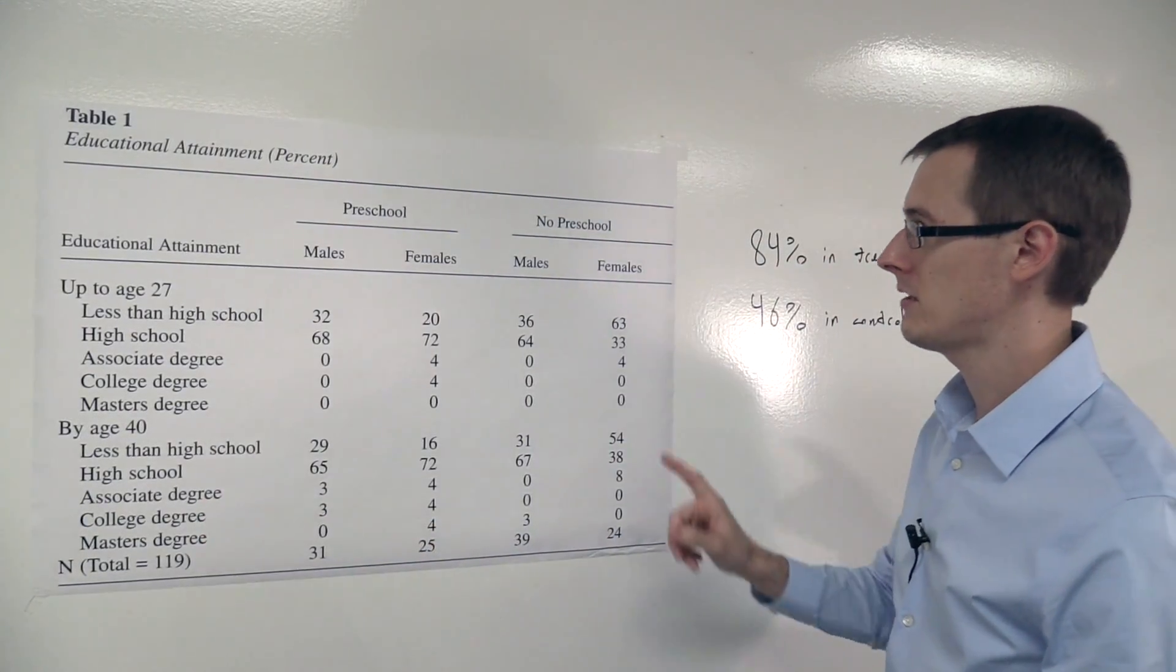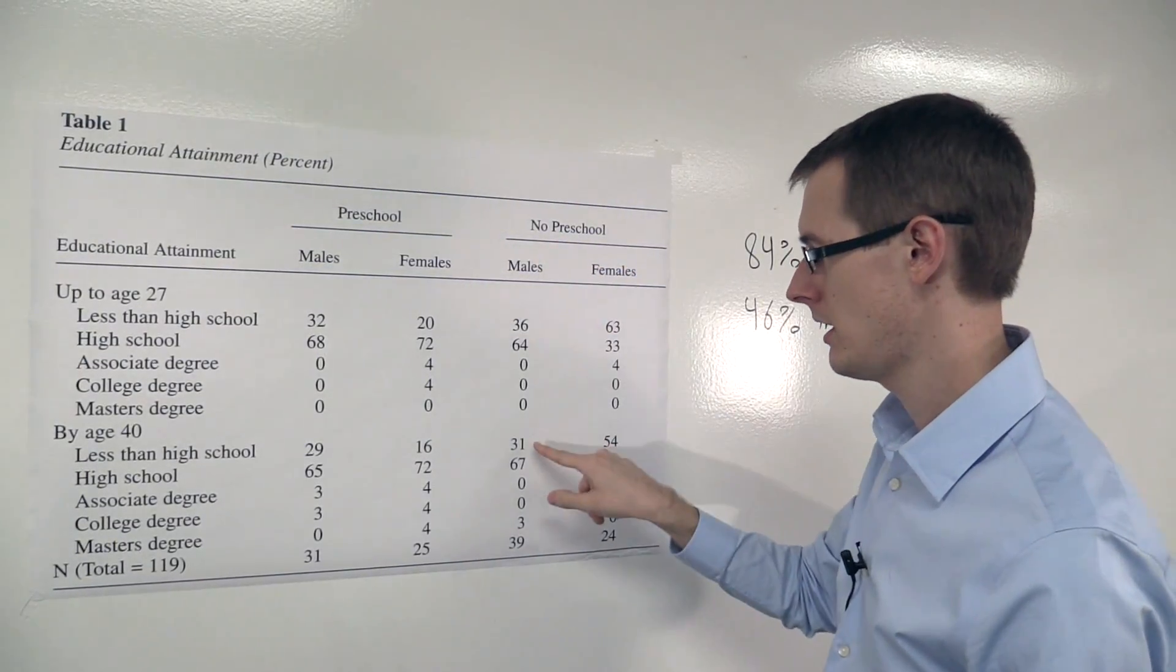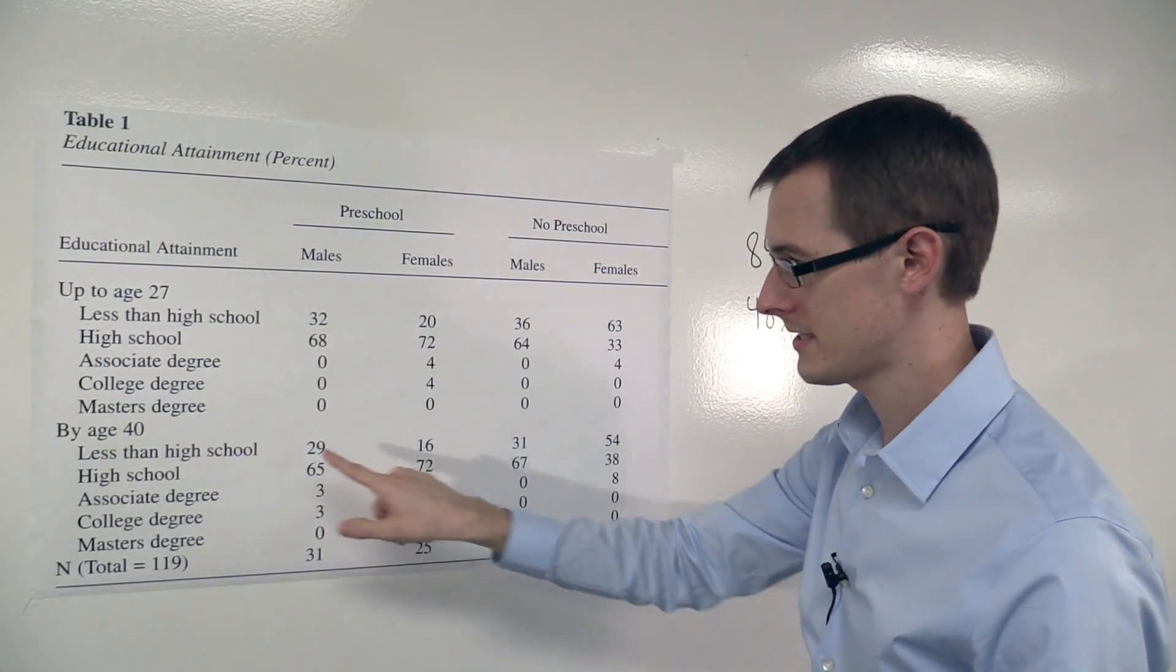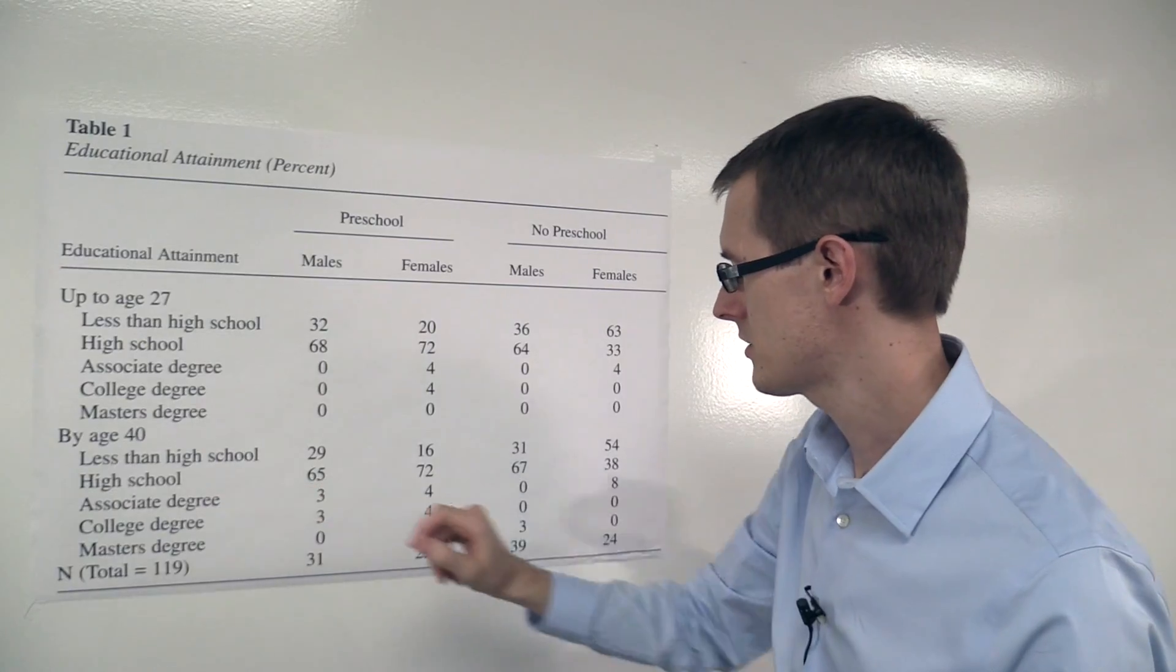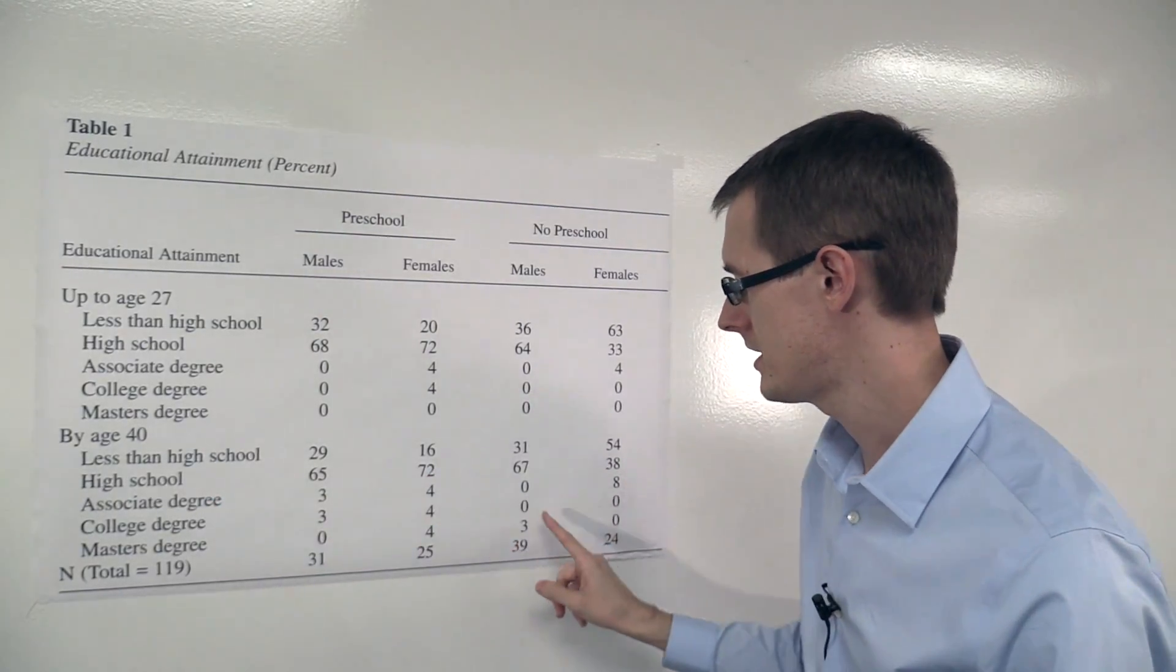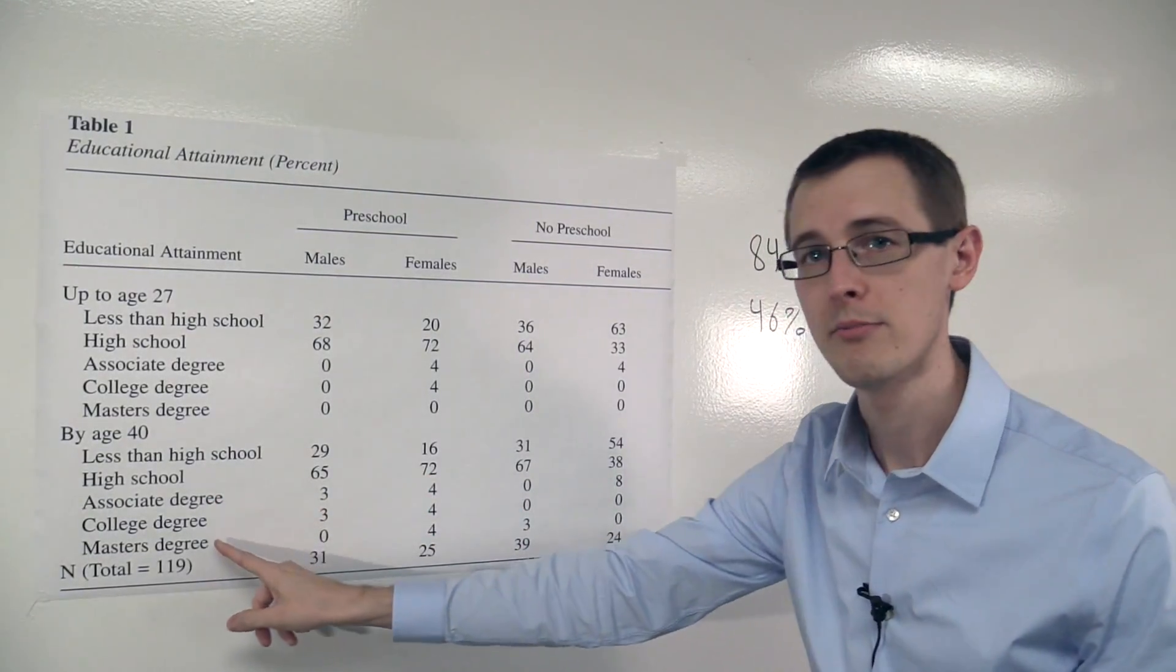Now let's compare that with the control group, males who didn't get preschool. 31% less than high school, 67% high school, 0% associate, 0% college, 3% masters.